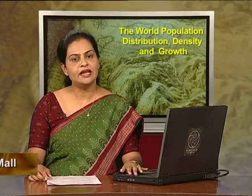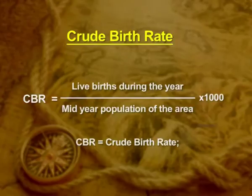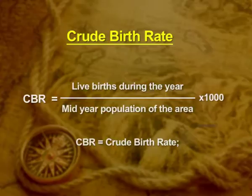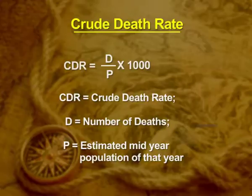Now, let us learn to compute the birth rate and the death rate. To compute the crude birth rate, we divide the number of live births during the year with mid-year population of the area and multiply the product by 1,000 to get the crude birth rate. Similarly, if we divide the number of deaths by the estimated mid-year population of that area and multiply the product by 1,000, we get the crude death rate.